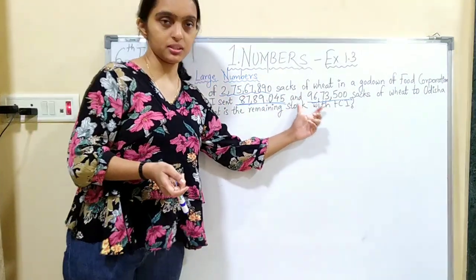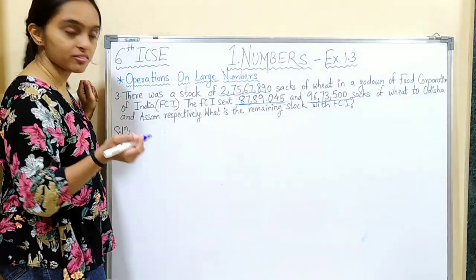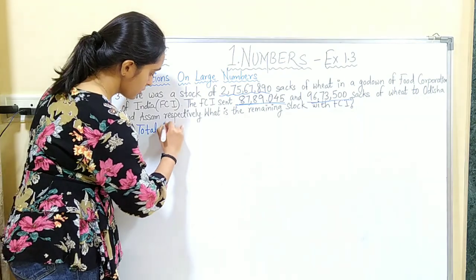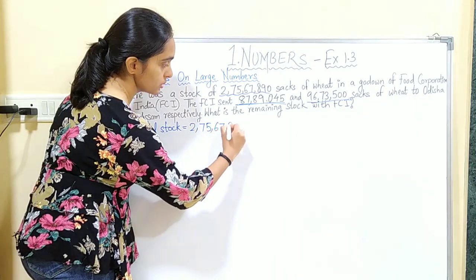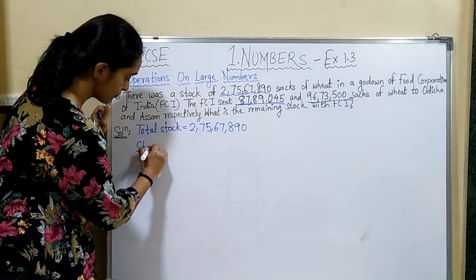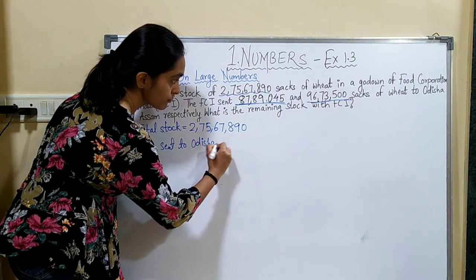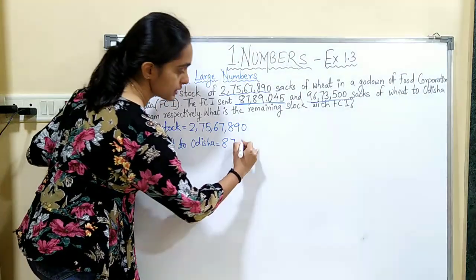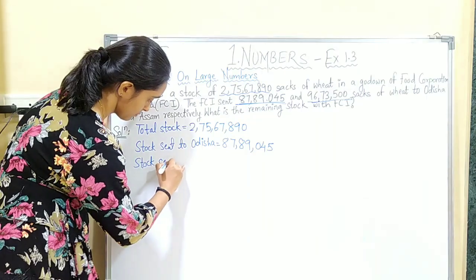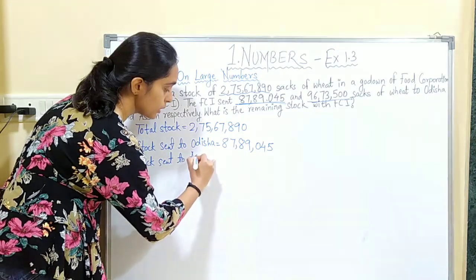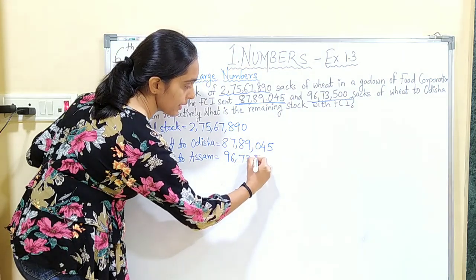We will add the two amounts sent to Odisha and Assam, then subtract from the total stock to get the final answer. Total stock is 2,75,67,890. Stock sent to Odisha is 87,89,045. Stock sent to Assam is 96,73,500.